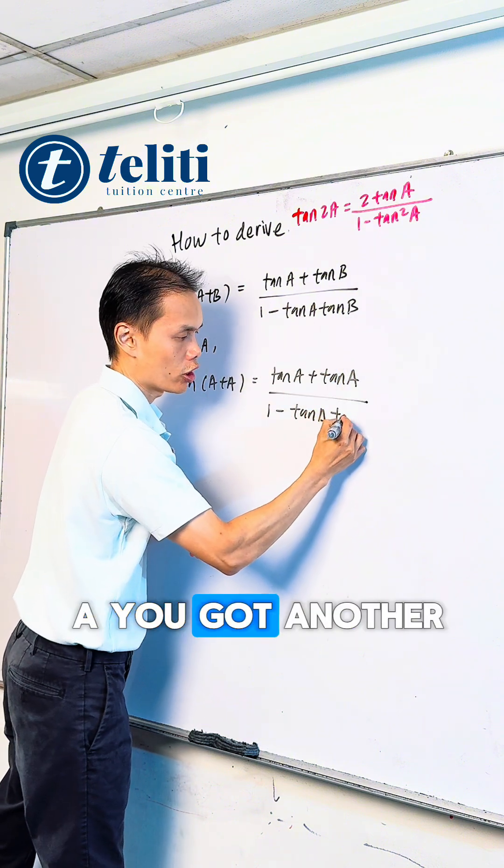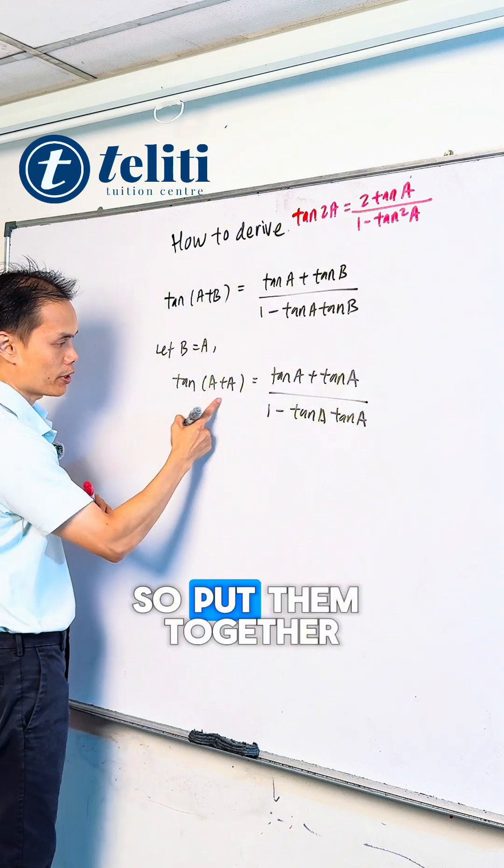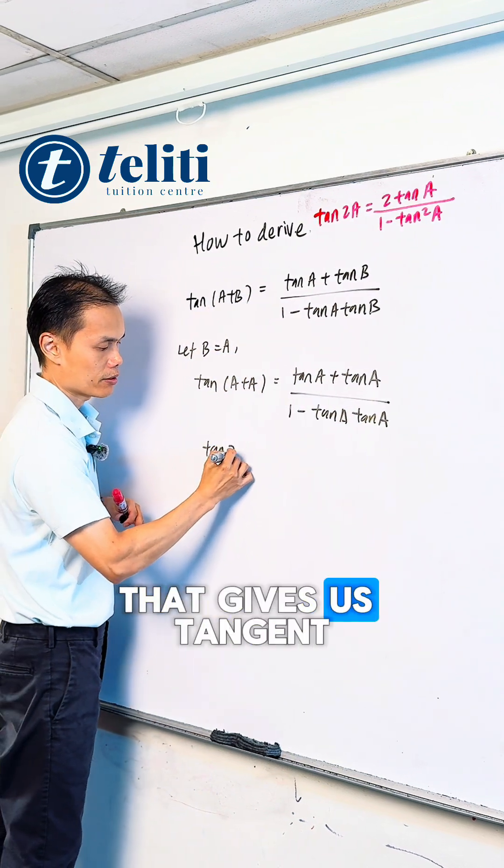Replace B with A. You got another tangent A here. So put them together: A plus A gives us tangent 2A.